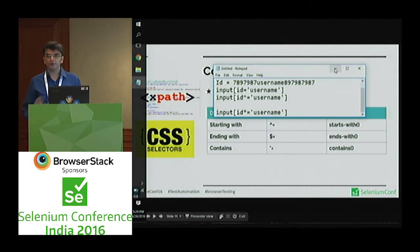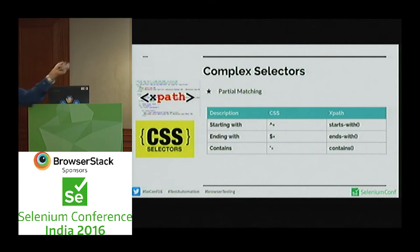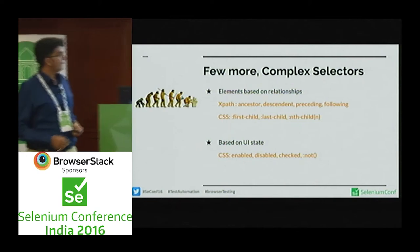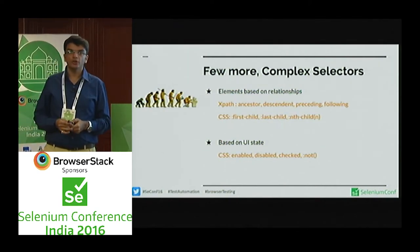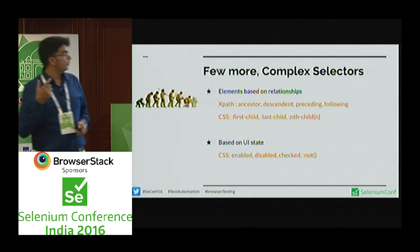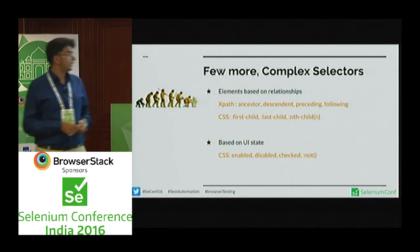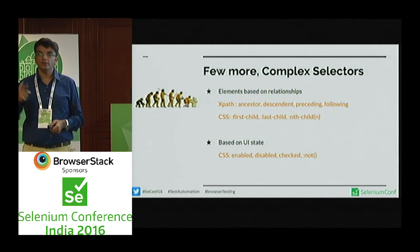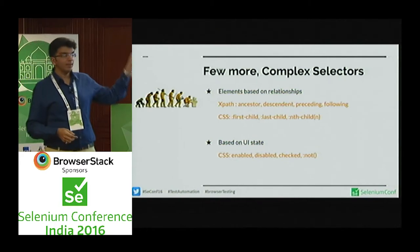Are the selectors clear so far? Similar notations exist for XPath — there's a comparison slide showing equivalent examples. Now, gradually you are able to find basic selectors with just attributes and values, but there are selectors where you have to find elements based on relationships or the hierarchy of elements.